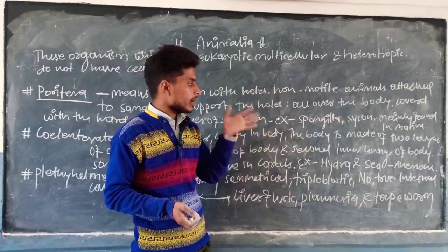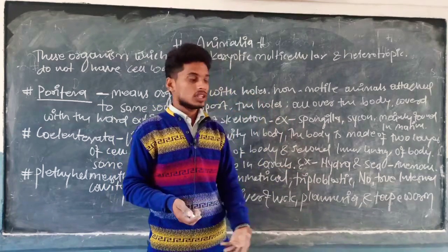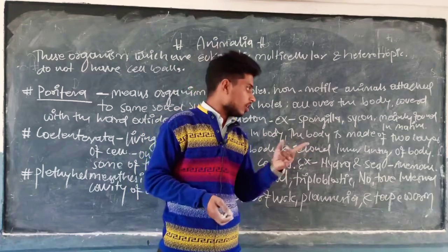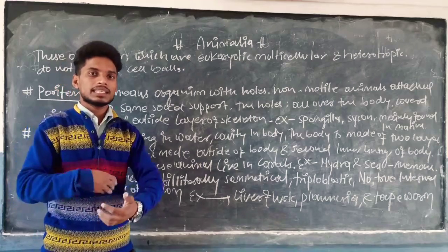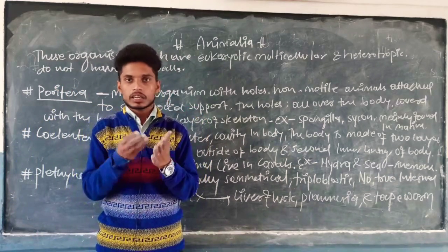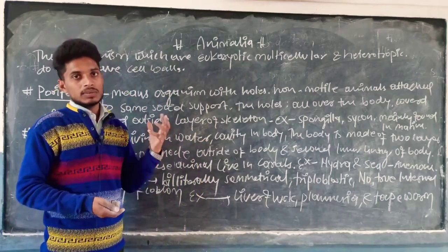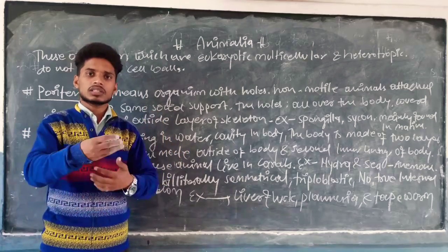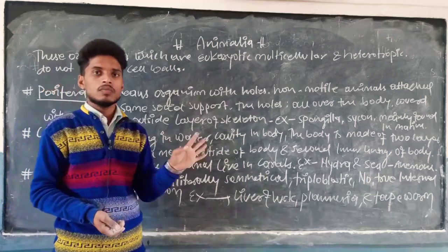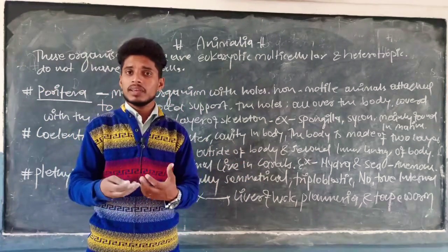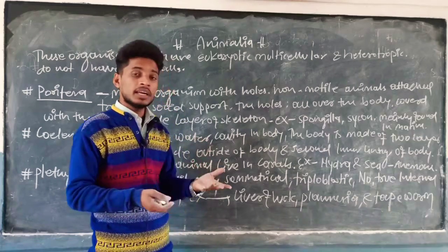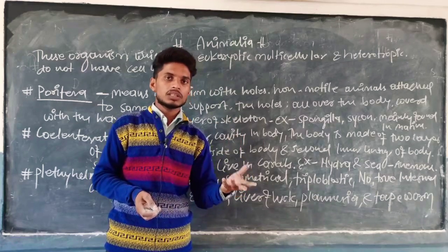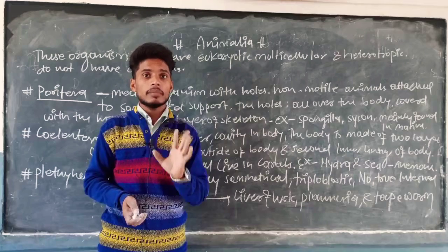Example के तौर पर Coelentrata में आप देखेंगे: Hydra and Sea Anemone. ये दो organism — Hydra और दूसरा Sea Anemone — दोनों Coelentrata के अंदर आते हैं। Coelentrata की characteristics: most organisms living in water, body cavity present रहती है, two kinds of cell layers से बनी होती है — एक outer skeleton बनाती है, दूसरी inner lining बनाती है। Most animals live in corals। जब भी animal kingdom के properties with example लिखने हों, diagram के साथ बताएंगे।